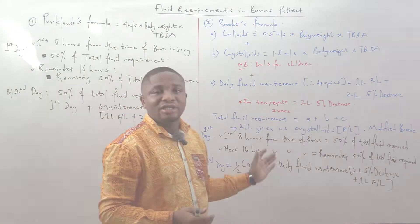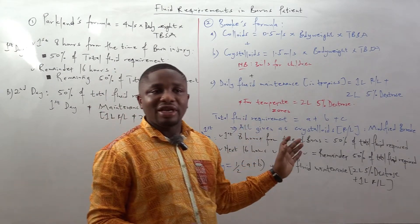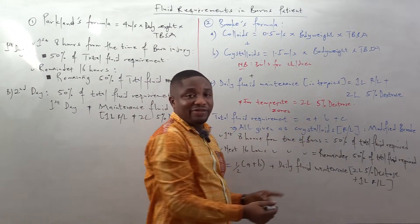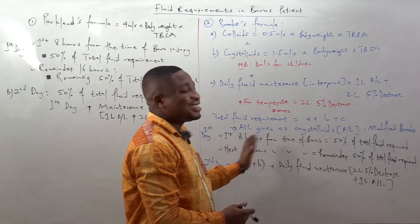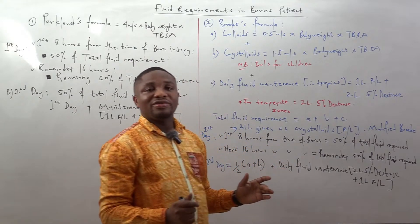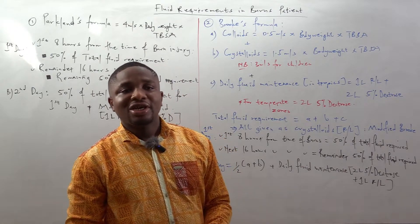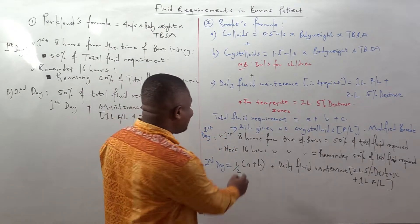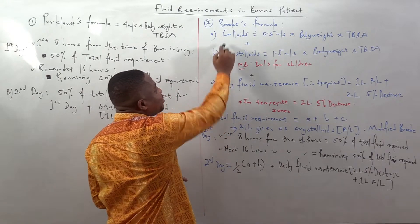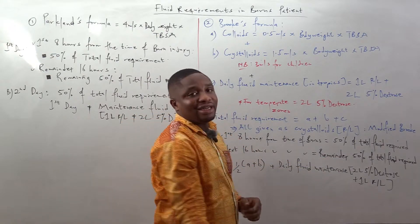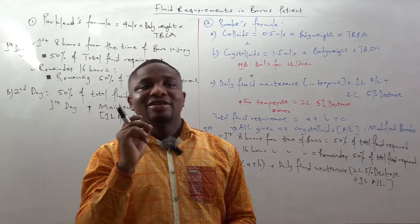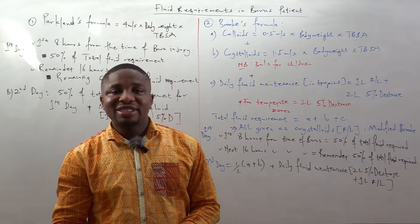How do we give the fluid for Brooks formula? In the first eight hours — similar to the Parkland formula — you give 50% of the total fluid volume, which is A plus B plus C. Then in the next 16 hours, you give the remaining 50%. On the second day, you give 50% — that is half of the A plus B volume — plus the daily fluid maintenance, which is one liter Ringer's lactate plus two liters of 5% dextrose.